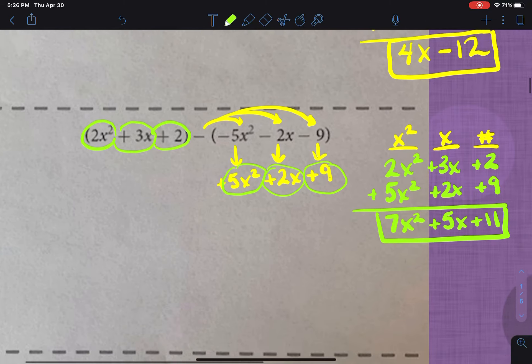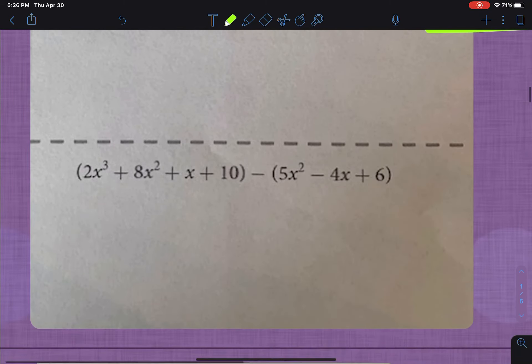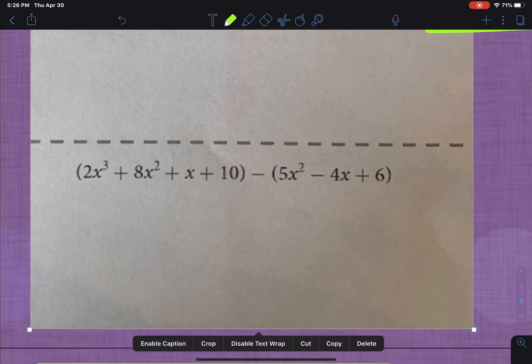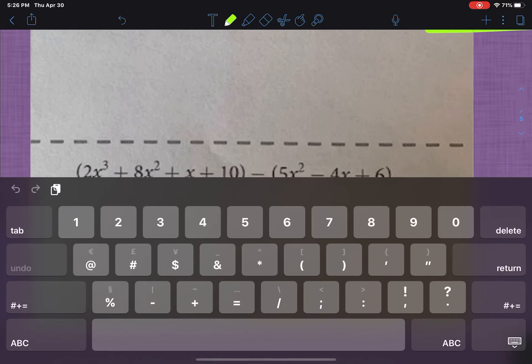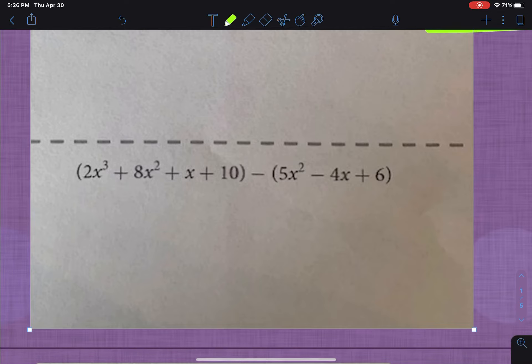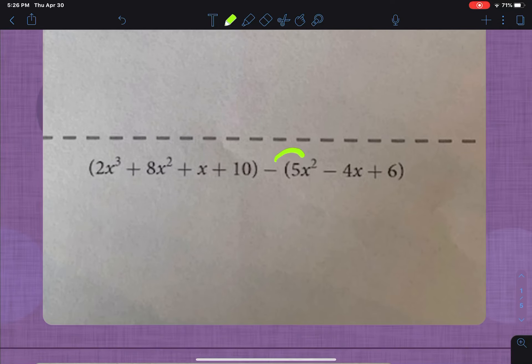Okay, let's try another one. So here's one that's even a little bit longer. But when we start, it starts the same way. Anything that is after the subtraction sign, I'm going to have to distribute my subtraction to. So remember, it changes signs. So this becomes negative 5x squared. This becomes plus 4x. And this becomes minus 6.